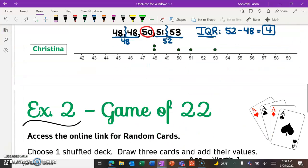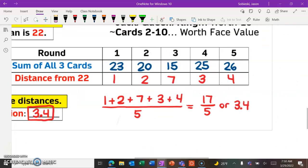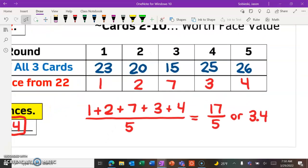Just as a quick example, I'll show you what mine looks like. So the five rounds, I got 23, 20, 15, 25, and 26.